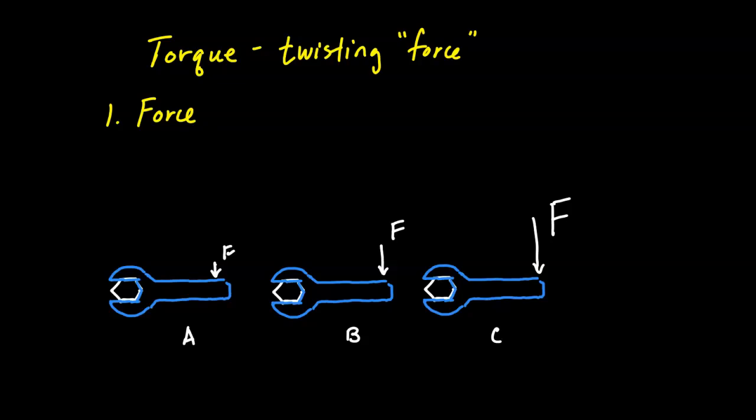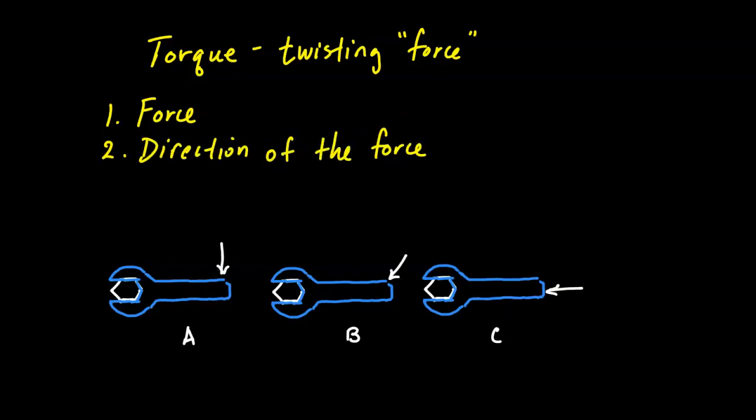Torque also depends on the direction of the force. A force applied at 90 degrees to the wrench produces the greatest torque. A force pointed directly at the axis of rotation produces the least torque. A force at an intermediate angle produces a torque somewhere in between. The greatest torque occurs when the force is perpendicular — at 90 degrees.